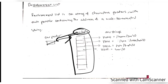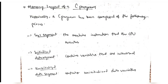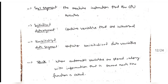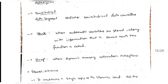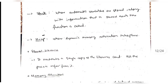Let's revise the memory layout of a C program. We have the text segment which contains the main code, initialized data segments for variables we have initialized, uninitialized data segment for variables not yet initialized, and we have the stack to store automatic variables and function return types, and the heap to store dynamic memory allocation.